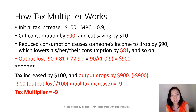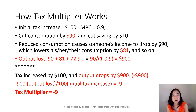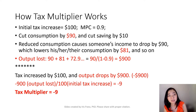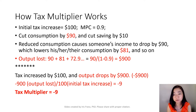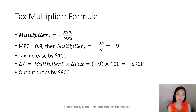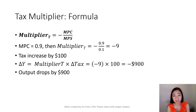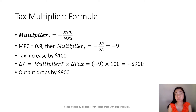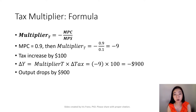You can see that initially our tax was increased by only $100, but the output goes down by $900. So our output loss of negative $900 divided by the initial tax increase of $100 equals negative 9. Therefore, the tax multiplier is equal to negative 9. Here is the formal formula: the tax multiplier equals negative MPC over MPS. With MPC equal to 0.9, the tax multiplier equals negative 0.9 over 0.1, which gives you negative 9.